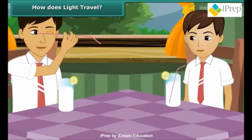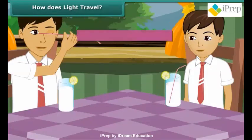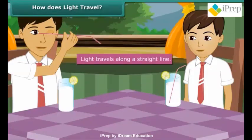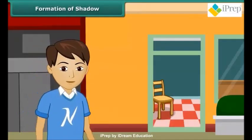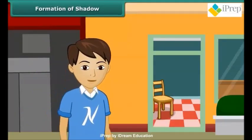Now when Ashish tries to look at you through the bent straw, he is unsuccessful. Does this activity prove something? Yes, it does. It proves that light travels along a straight line.